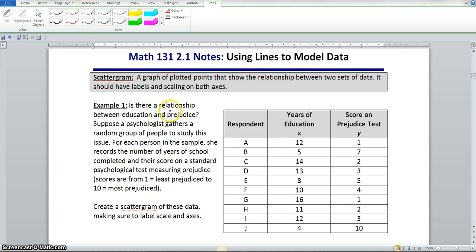Example 1: Is there a relationship between education and prejudice? Suppose a psychologist gathers a random group of people to study this issue. For each person in the sample, she records the number of years of school completed and their score on the standard psychological test measuring prejudice. Create a scattergram of these data, making sure to label scale and axes.